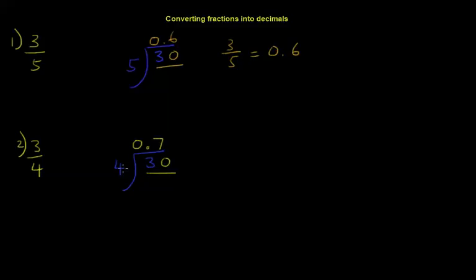And then since 4 times 7 is 28, how do we get from 28 to 30? How much more do we need? The answer is 2. So we have a remainder of 2 here.